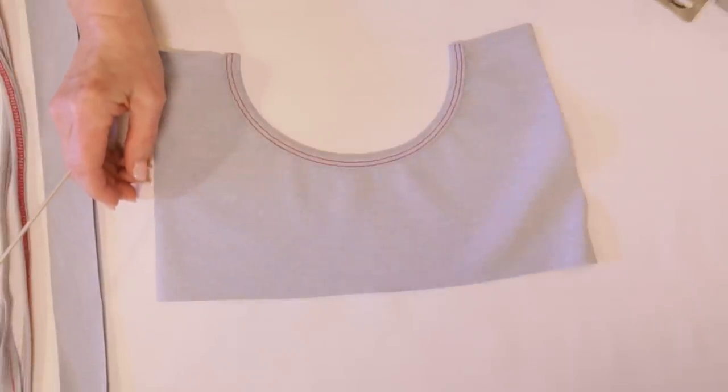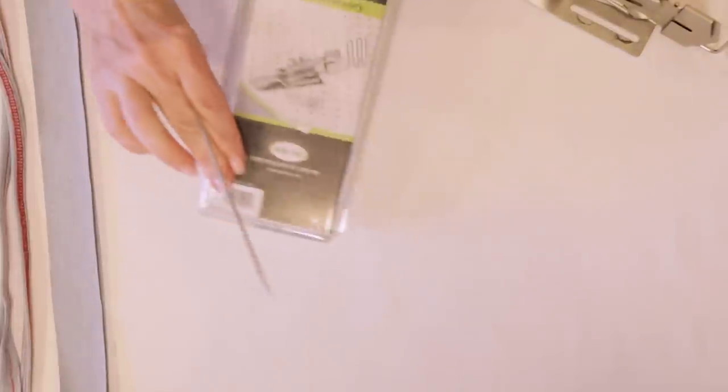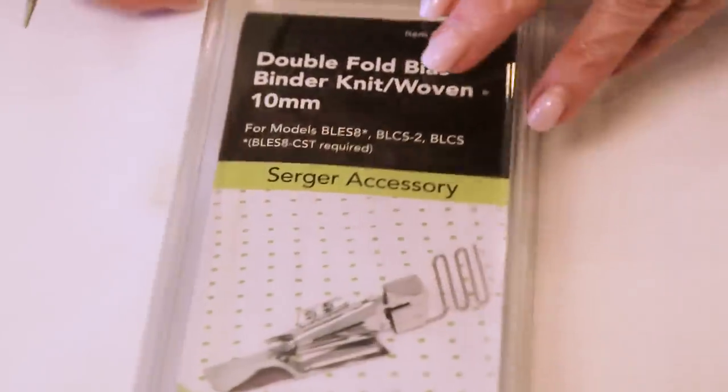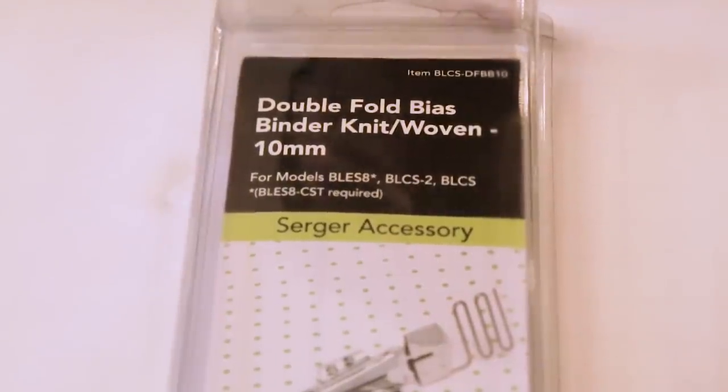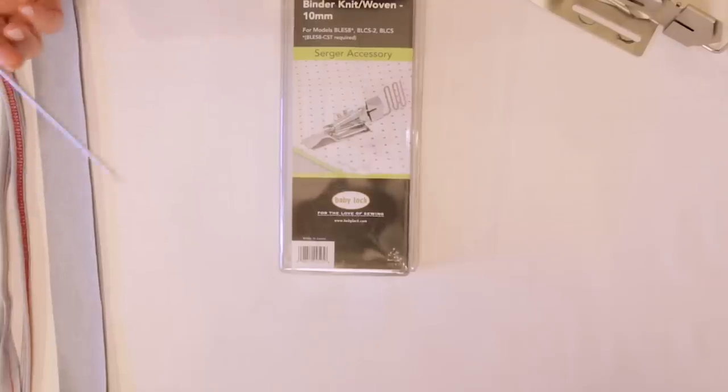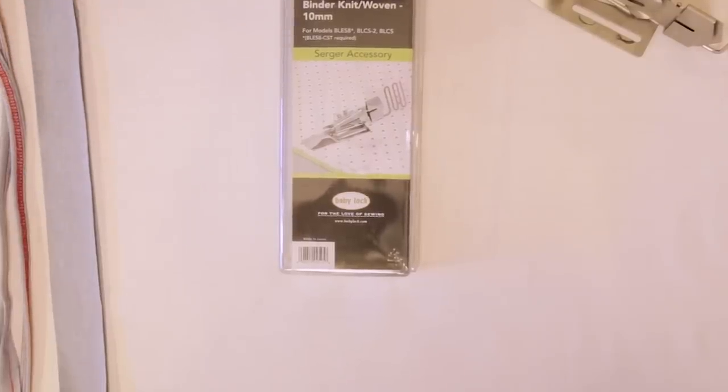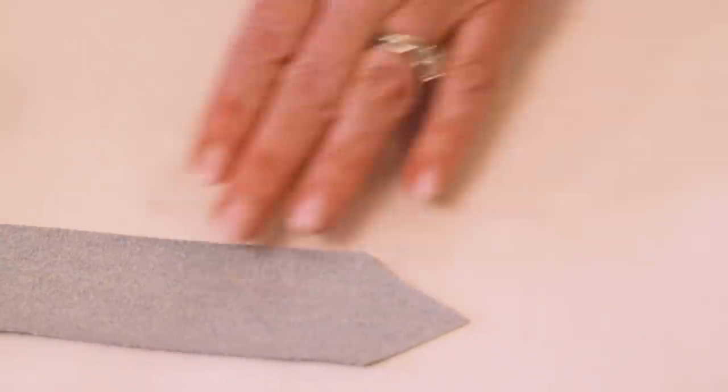So how did we get here and how do we get started? I'm going to go over the parts of the binder. As I said, this is a double fold binder for knit and woven fabrics and it's 10 millimeters. They have several different widths available, so that's your preference. Inside the packaging there's usually an instruction sheet telling you how wide to cut the strip itself for the binding.